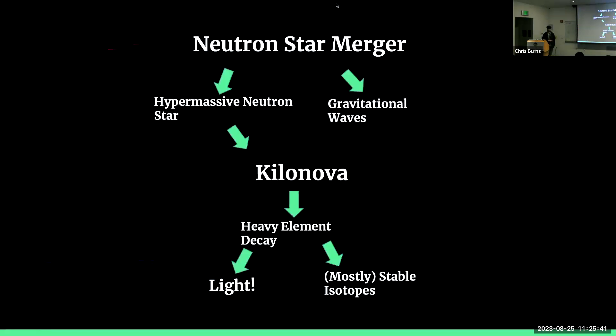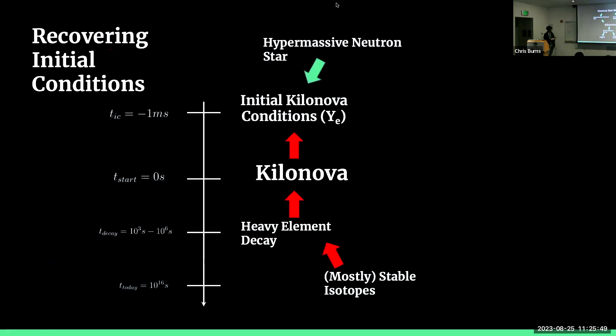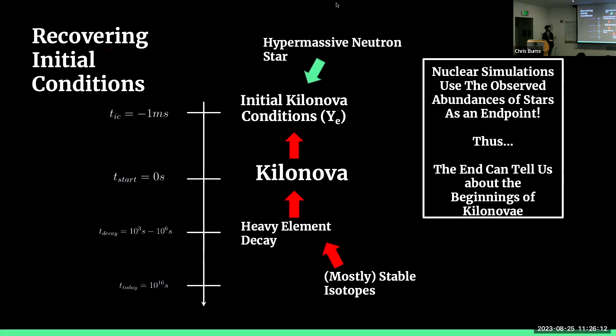So now, going from these abundances back in time to understand the initial conditions, we can turn this process over time. Where we start with the mostly stable isotopes on the scale of giga-years, which is today, going back up past the heavy element decay, which again is over hours to weeks, to the initial conditions which happen right before the Kilanova happens. And basically, we're using these mostly stable isotopes as an endpoint for simulations, trying to go down through here.